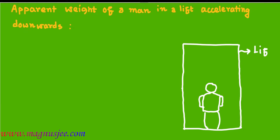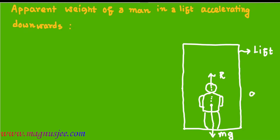Apparent weight of a man in a lift accelerating downwards. In the diagram, this is a lift or elevator and a man is standing inside the lift. Mg is the true weight or actual weight of the man. R is the normal reaction applied on the man by the lift, and the lift is moving downwards with an acceleration A.